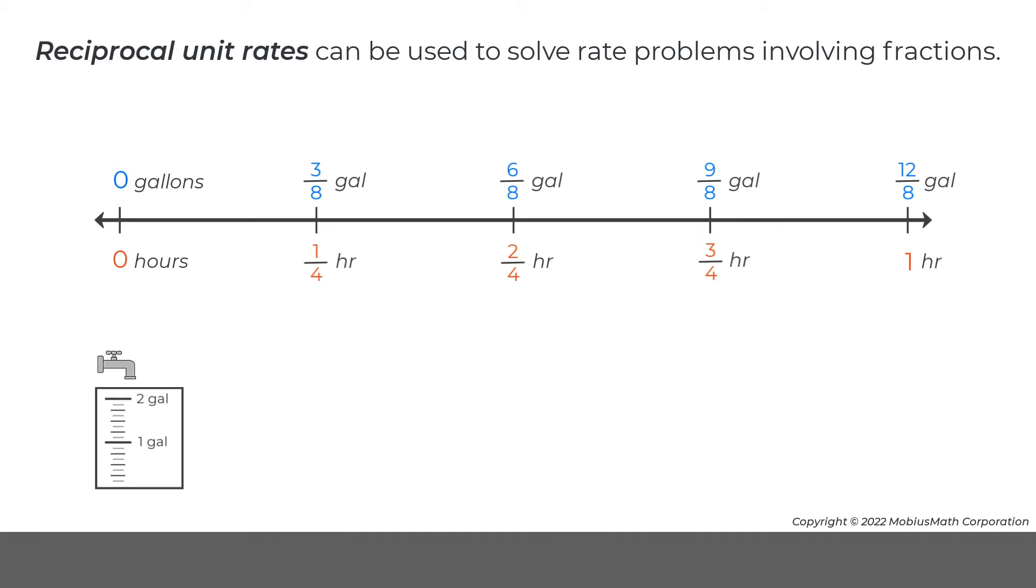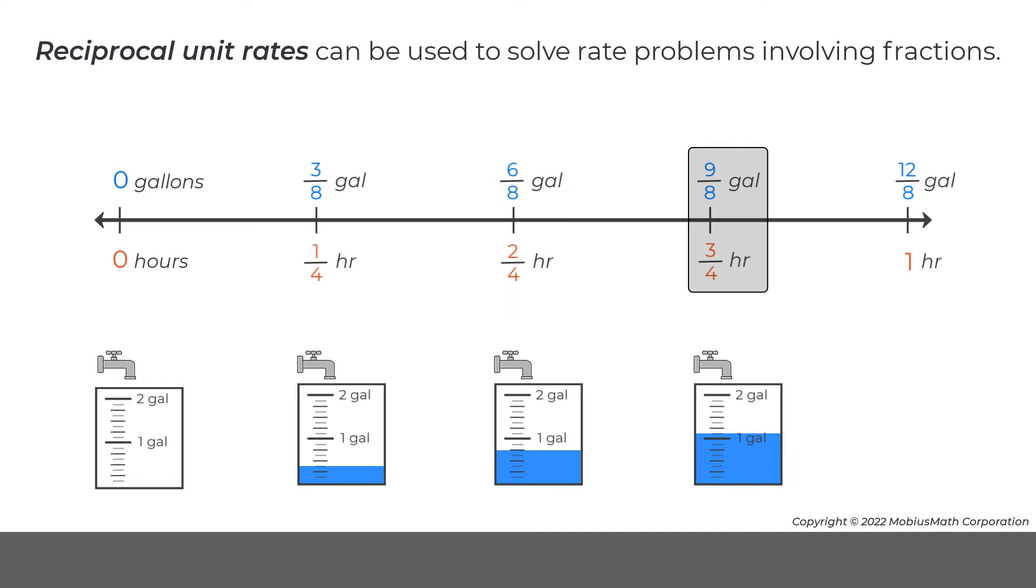In the previous video, the values on this double number line represent a faucet that is leaking at a rate of 3 eighths of a gallon of water in 1 quarter of an hour.